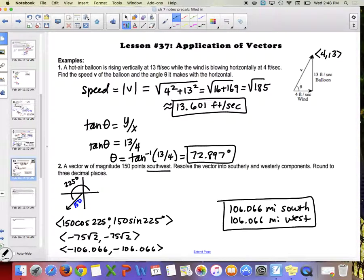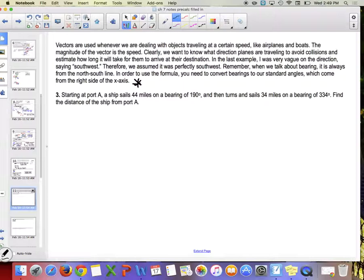So it says in the last example I was very vague on the direction, I just said something like southwest. Air traffic controllers are not going to say go southwest, right, that's probably not good. So in that problem we assumed it was perfectly southwest, but we've talked about bearing before. We're going to go back to using bearing, but the thing with vectors is whenever I use bearing I have to change it into the standard angle. So write yourself a note there: if you have bearing, change to a standard angle. Like a unit circle angle, starting along the positive x-axis and rotating around counterclockwise.